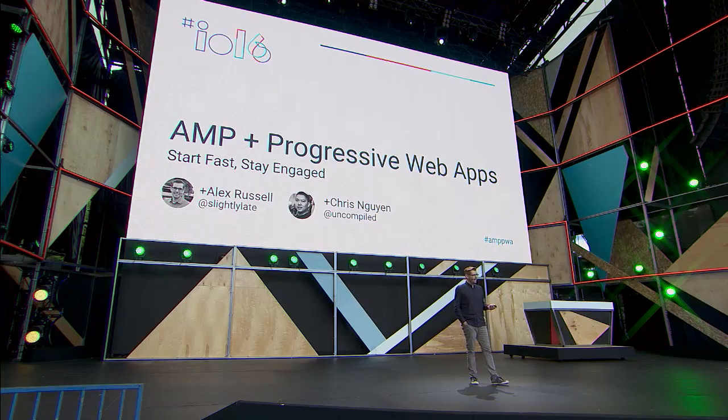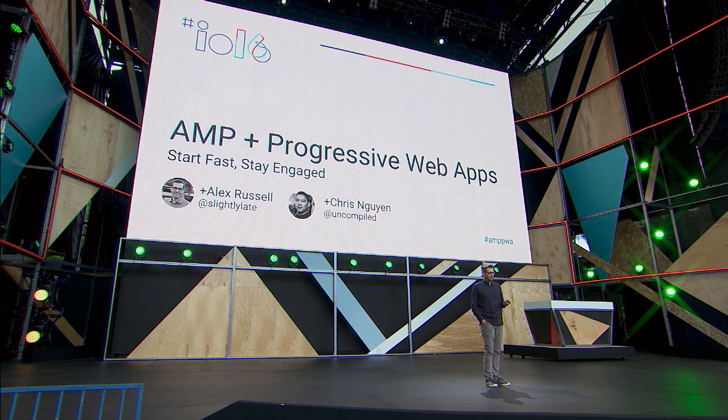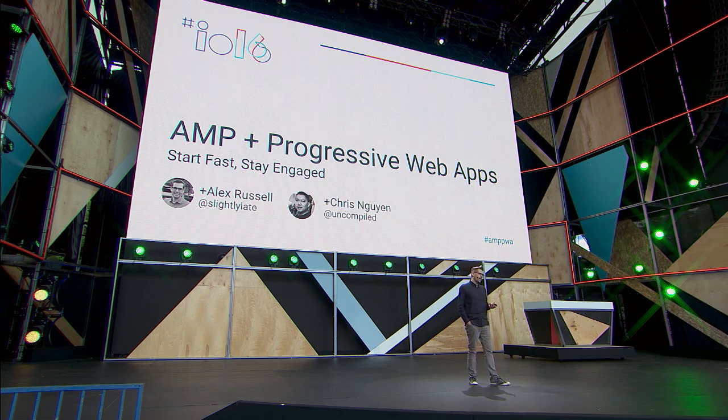If you saw Rahul and Dave's talk yesterday, what you may have taken away is that we're serious about helping you adopt and succeed with two technologies this year: progressive web apps and accelerated mobile pages, or AMP for short. We don't have time to get into all the technical details today, so I recommend Jake Archibald's talk on progressive web app architectures and multi-oogle's talk on how AMP achieved its performance. What we're going to talk about today is end-to-end performance across multiple pages and even across multiple sites — how we can build reliable experiences for users.